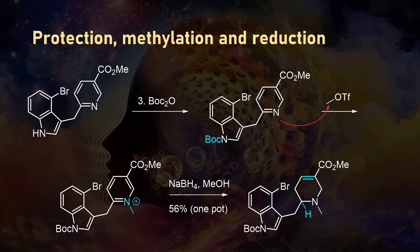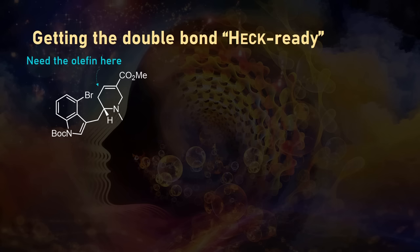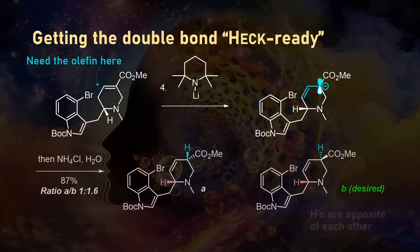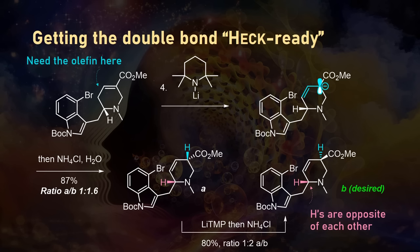Now you might think: to enable the key Heck coupling reaction, the olefin actually needs to be located at the other carbon, which would require an isomerization. They achieved this by using lithium TMP as a very strong base, giving the isomerized anion which can be protonated in a diastereoselective manner. The desired isomer is the one where the ester is on the same side as the existing hydrogen of the six-membered ring. While the preference of this re-protonation isn't that great, the desired isomer is formed in slight excess, and conveniently it can be recycled by subjecting it to the same conditions to convert some of it to the desired product.